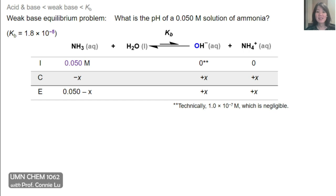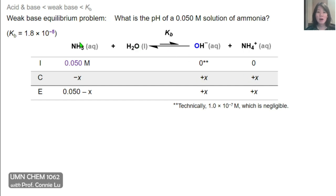Technically, pH 7 water has a concentration of hydroxide of 1×10⁻⁷ molar, but this is a really minor small value and is essentially negligible considering the amount of weak base that we start with. So this reaction has to move to products because we only have reactants. So the change is minus x for ammonia and plus x for both of these products. The minus 1 and plus 1 coefficients come from the fact that the coefficients in the balanced reaction are all 1.